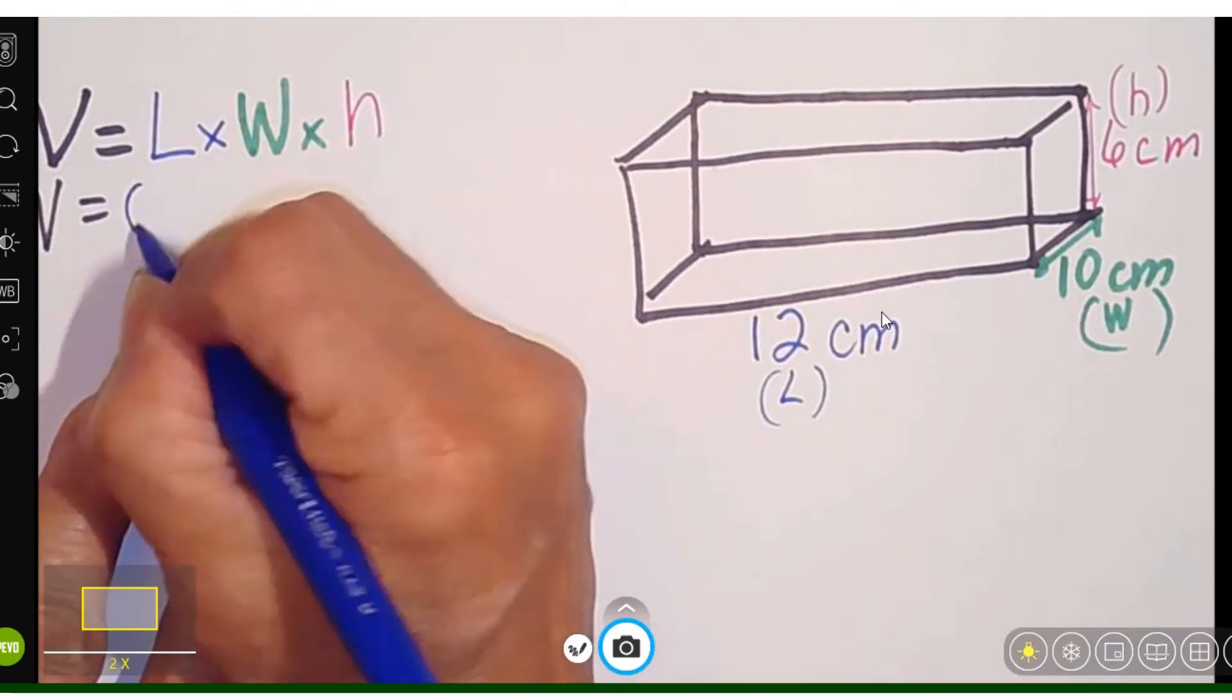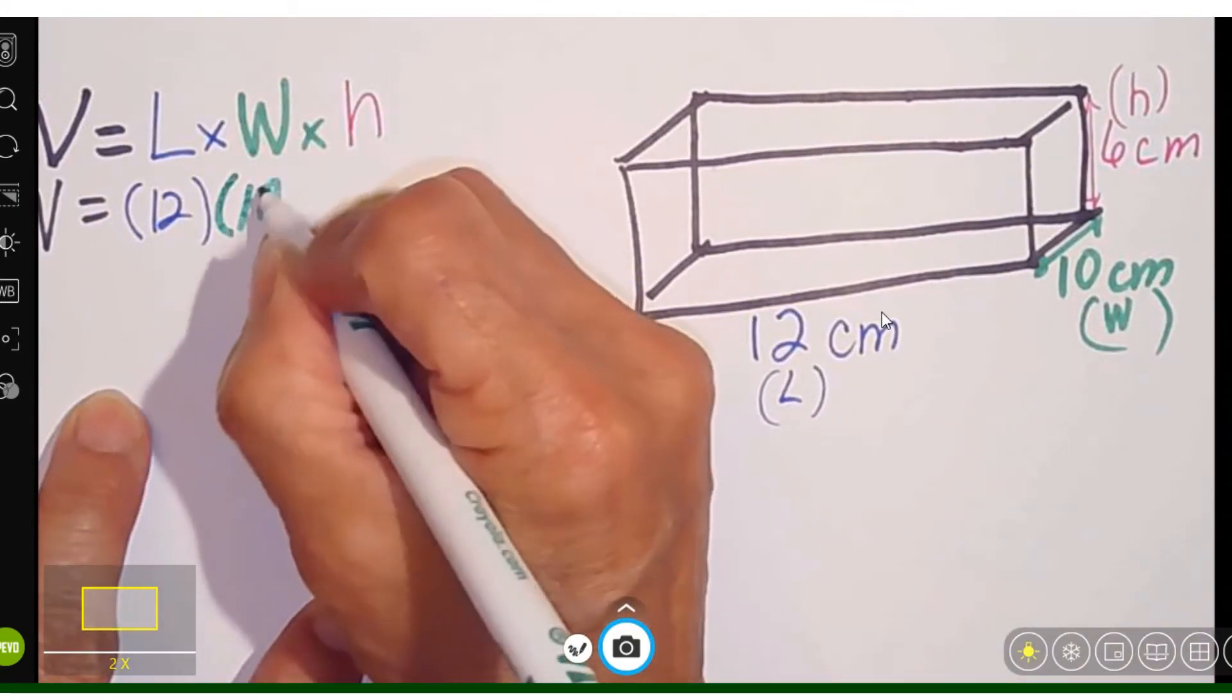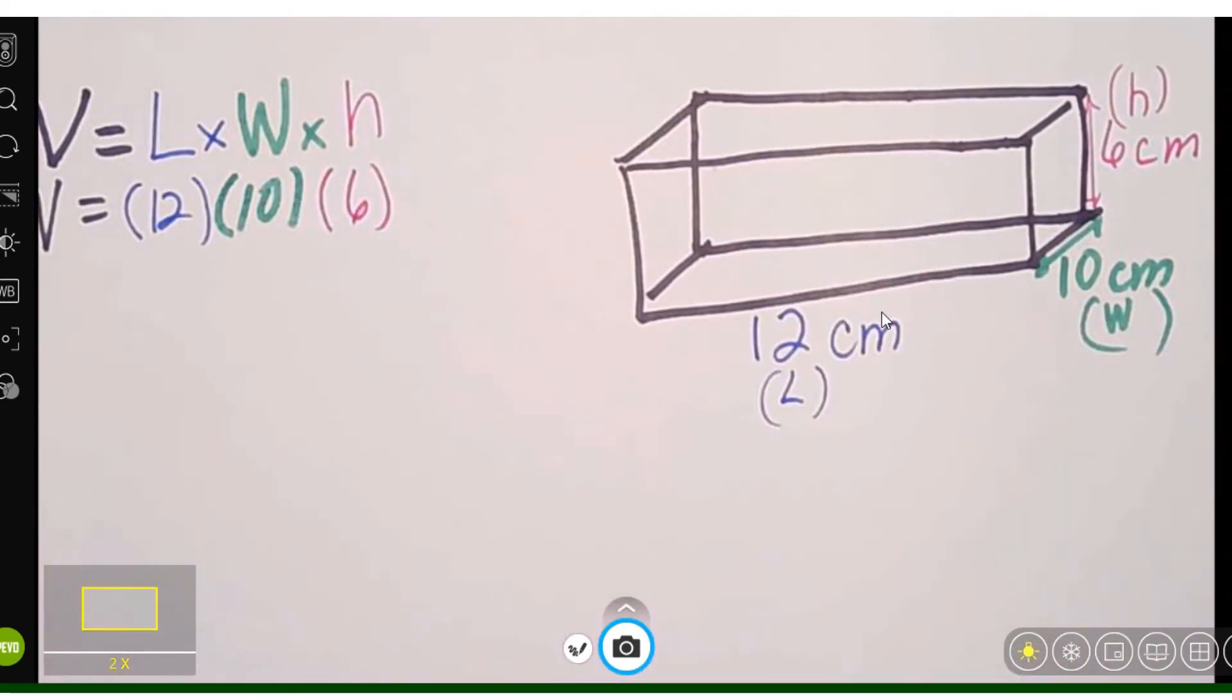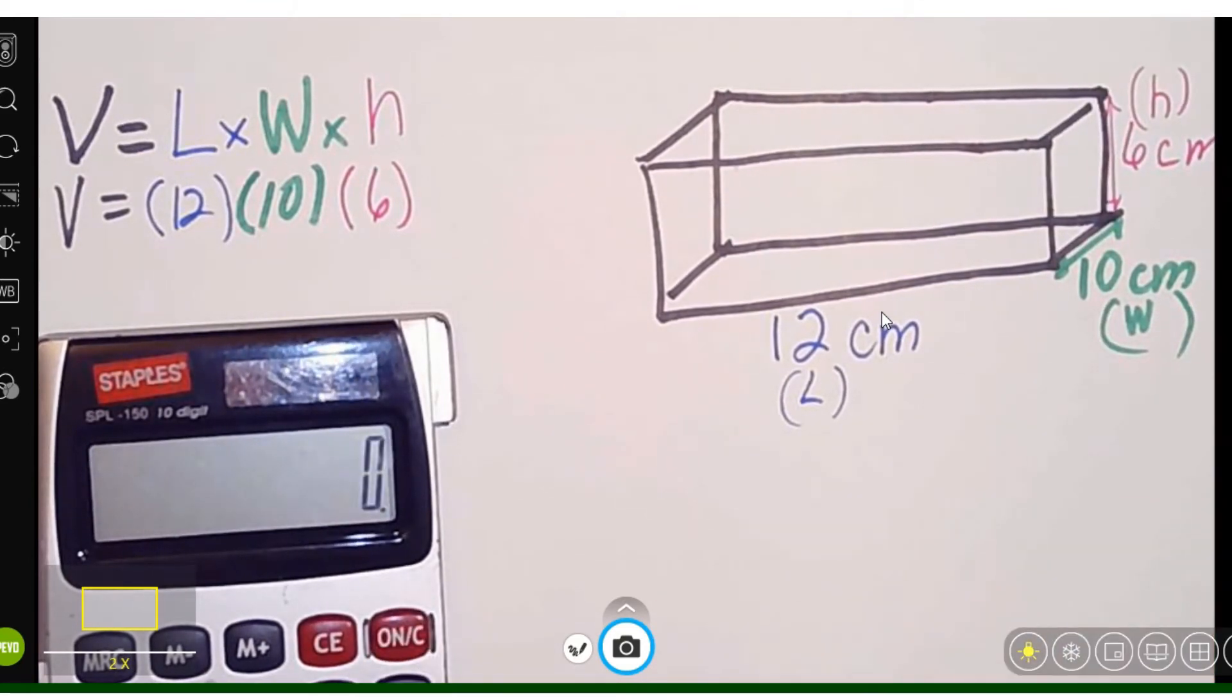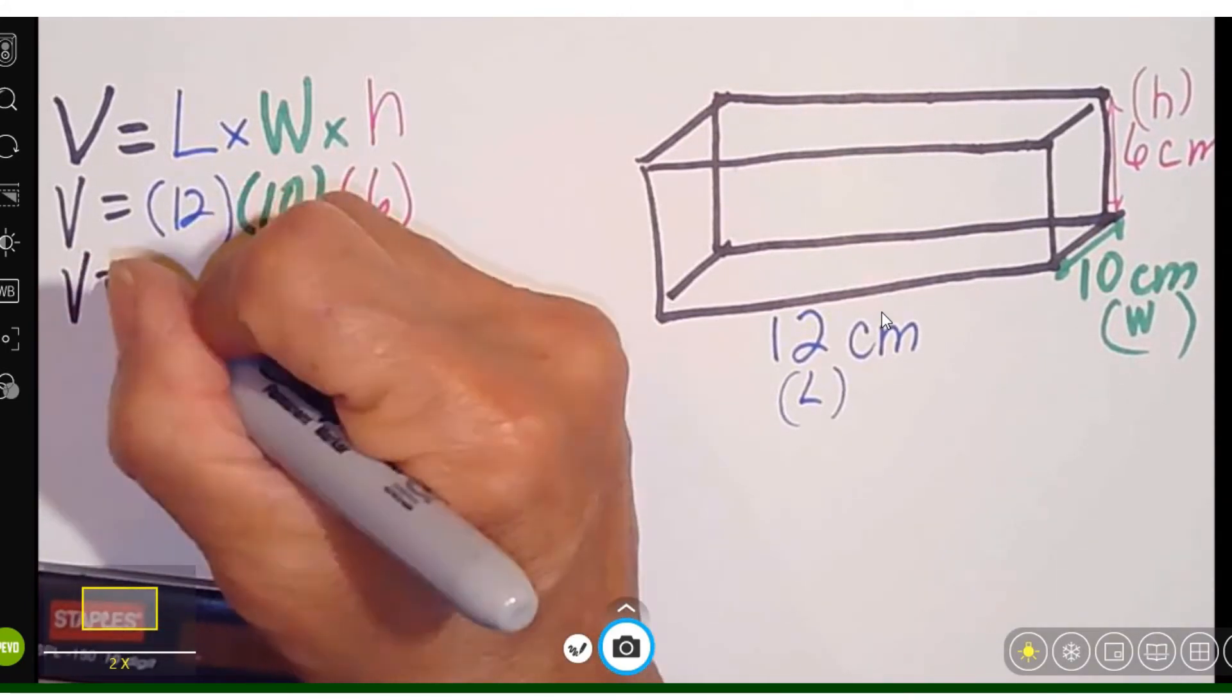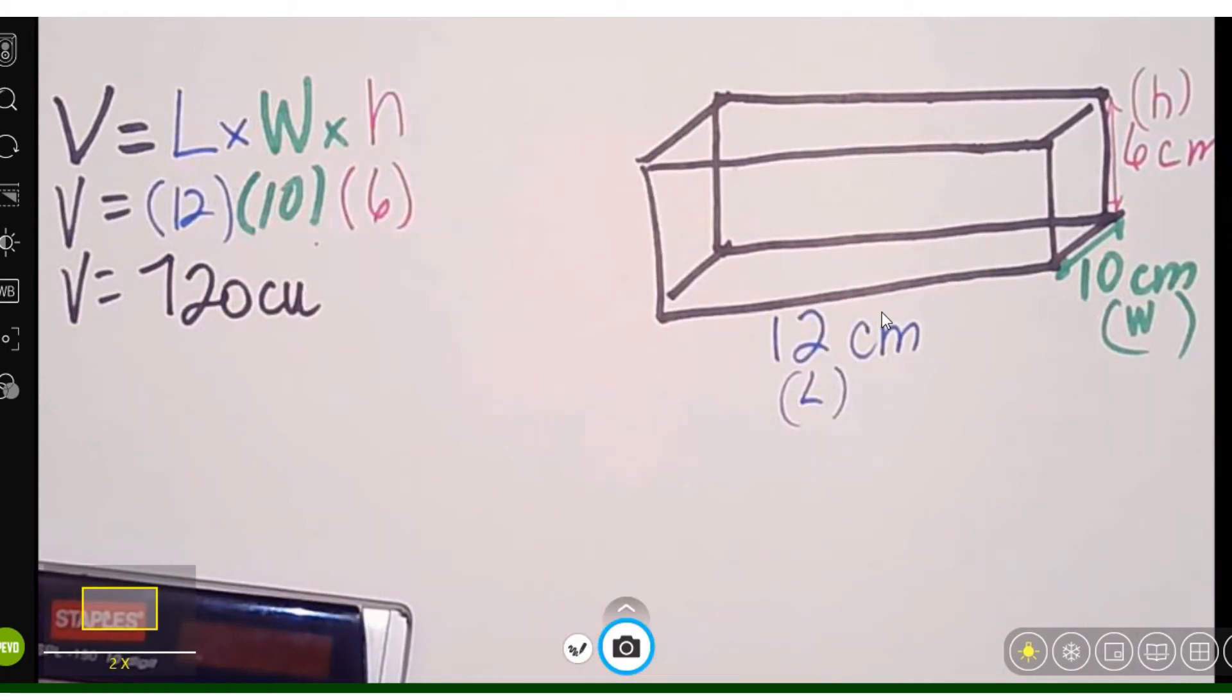Okay, so my length is 12 times 10 times 6. I'm going to use my calculator to multiply these to make it easier. So we have 12 times 10 times 6 equals 720. So that's going to be V = 720 cubic centimeters.